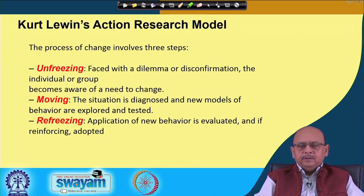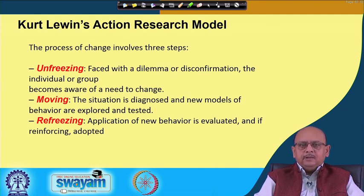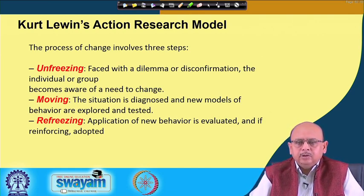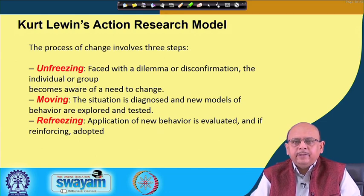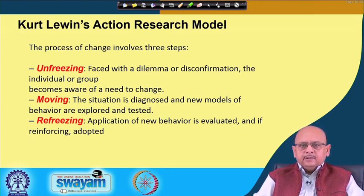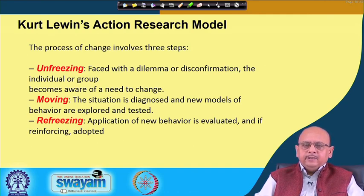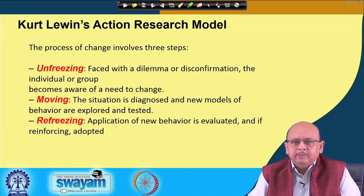Once the change is implemented, then you go for refreezing. When we are talking about refreezing, it means that you want the new behavior to be embedded with the system. For example, the flexible manufacturing system is now embedded with the system — it is a part of the organization, and people have started working to produce results. If you look at this action research model, it talks about starting with unfreezing, then going about a change, and then finally refreezing. It means that the change gets institutionalized, established, and becomes a part of the organization.